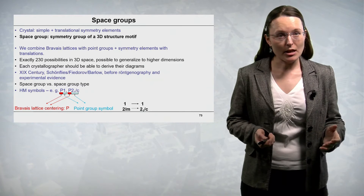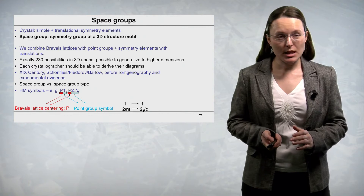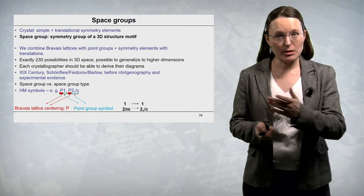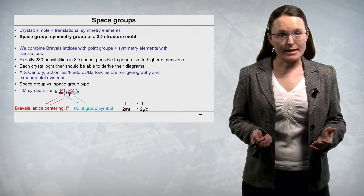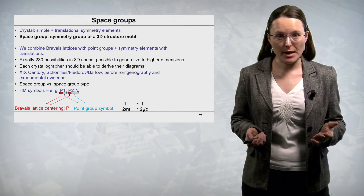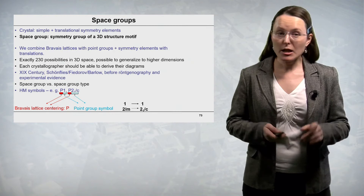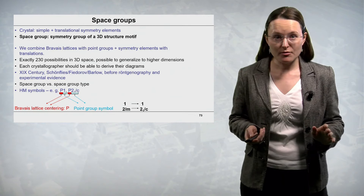Crystal structures contain simple and translational symmetry elements. A symmetry group of the three-dimensional structure motif is the so-called space group. In space groups, we combine the Bravais lattices with point symmetry groups and symmetry elements with translations — the screw axes and glide planes. It can be demonstrated by group theory that there are exactly 230 space group types possible in three-dimensional space, and these concepts can be generalized into higher dimensions. In principle, each crystallographer given pencil and paper with enough time should be able to derive all 230 space group types.